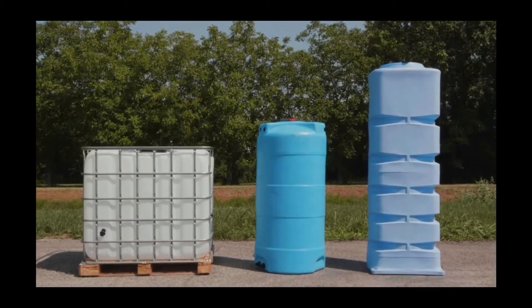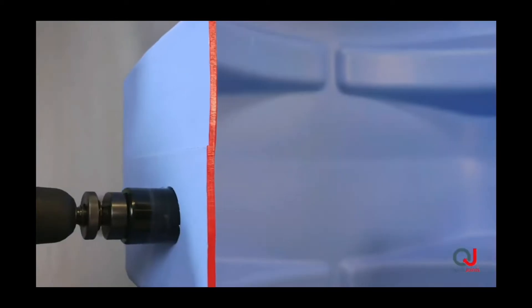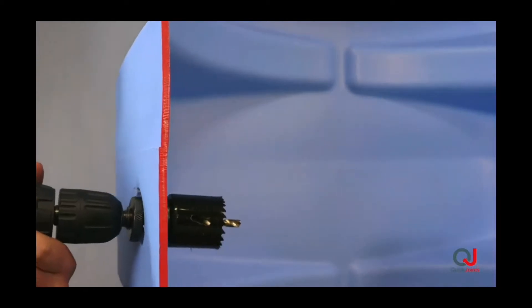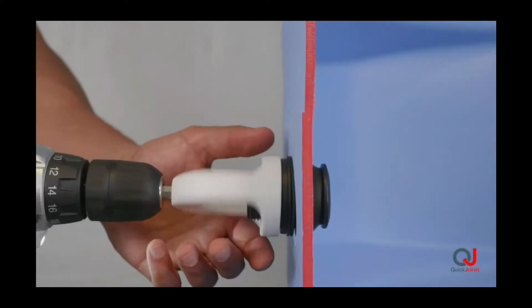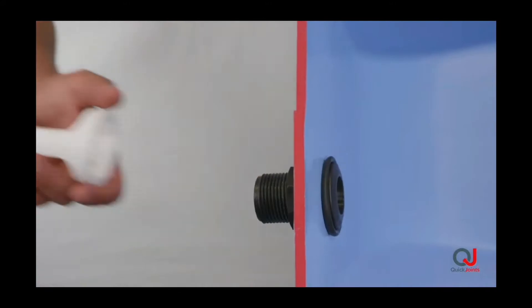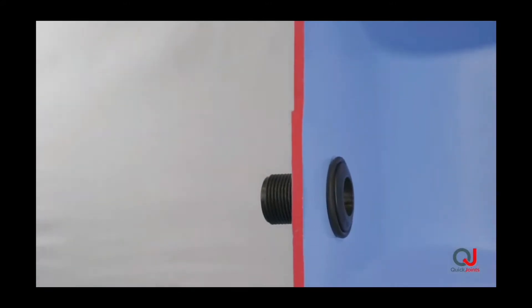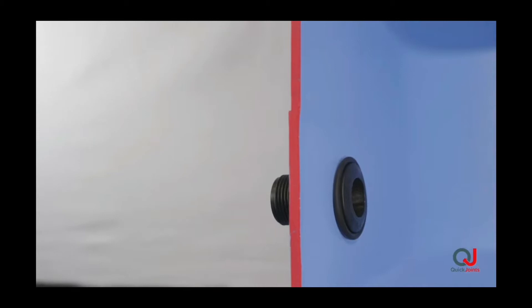Once the drainage hole has been made in the right dimension with a drilling cutter, it will be possible to install the QJ in just three seconds from the outside of the tank with the commitment of a single operator.